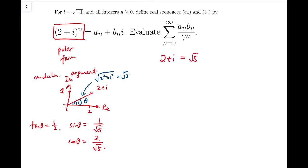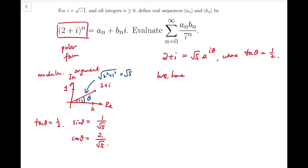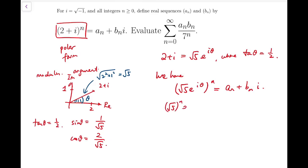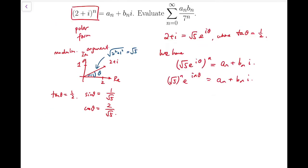Now 2+i can be written as √5·e^(iθ), where tan(θ) = 1/2. By rewriting, we have (√5·e^(iθ))^n = a_n + b_n·i, so √5^n·e^(inθ) = a_n + b_n·i, where e^(iθ) is defined by cos(θ) + i·sin(θ).